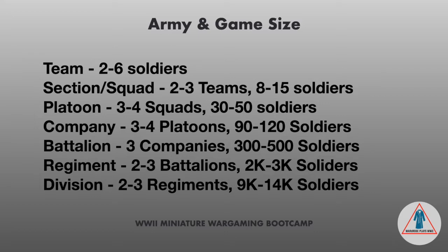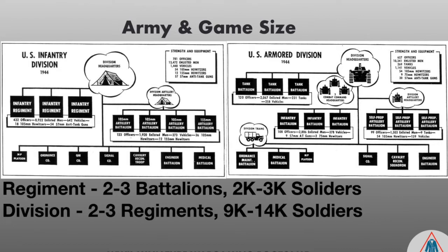Above platoon is a company, made up of three to four platoons - exponentially more people, around 60 to 150 soldiers depending on the era. Then from companies you go up to battalions. In games like Blitzkrieg Commander or Command Decision, each stand equals a platoon, so nine stands can represent a battalion of soldiers, plus tank support, artillery support, officer support, and sometimes supply.